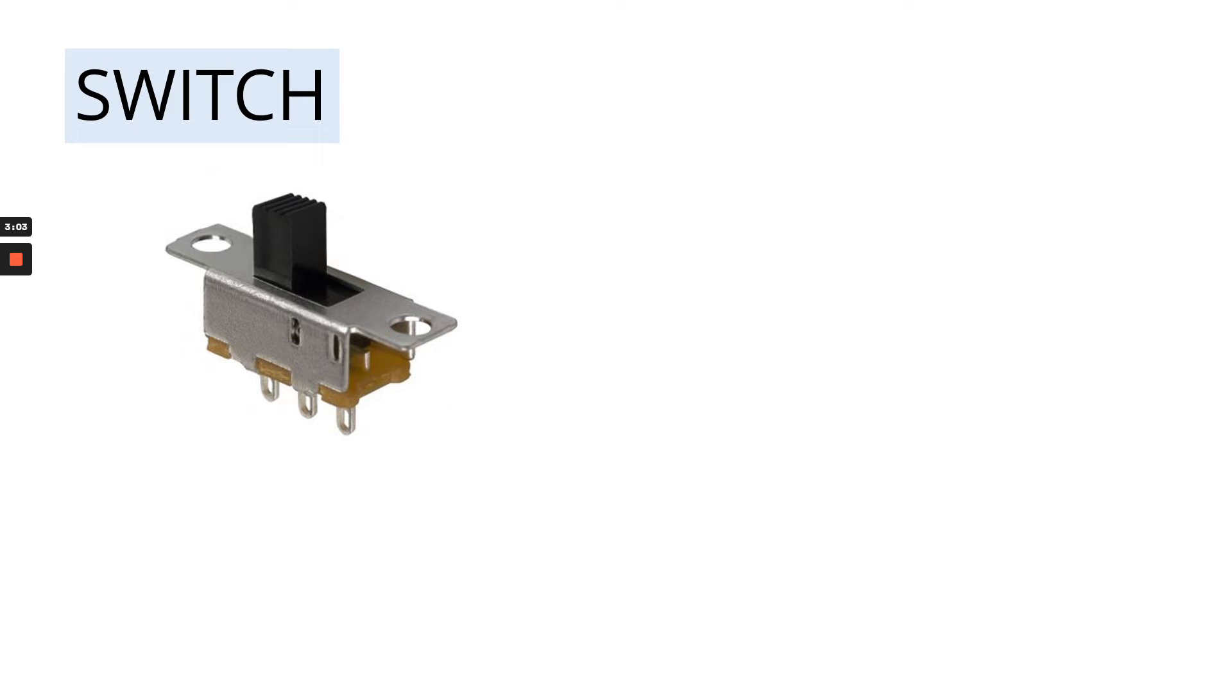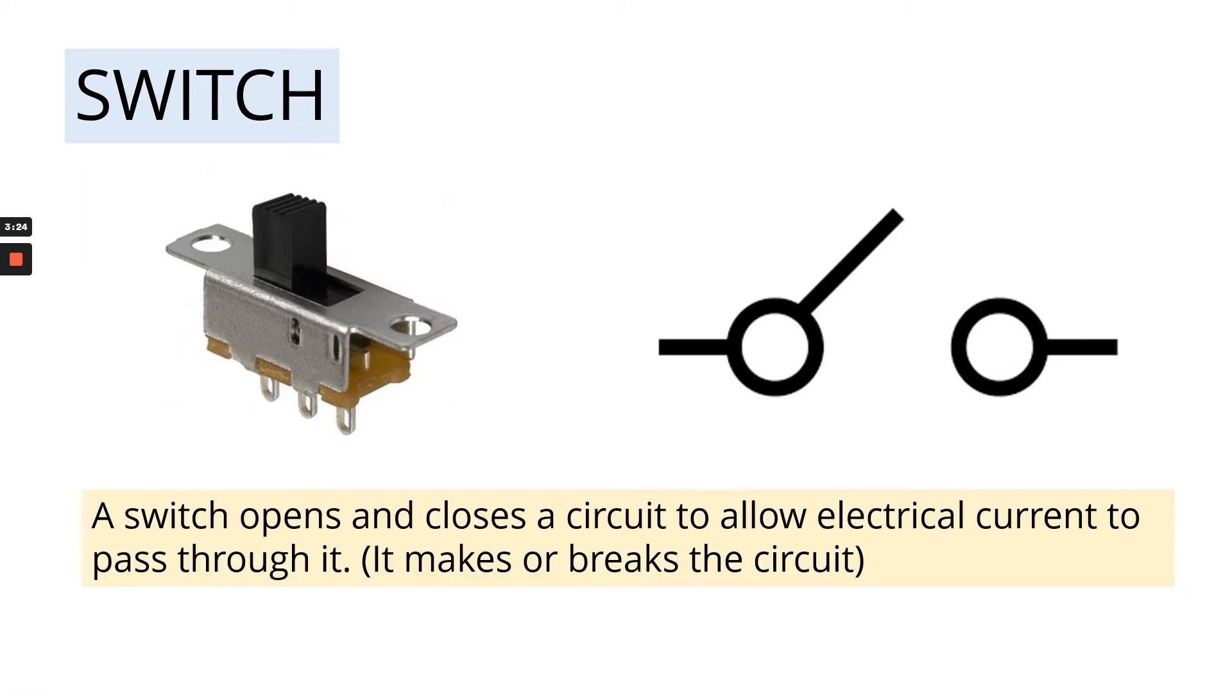So our first one we're looking at is a switch. This is the type of switch that you've got. You've got a toggle switch. And this is the component symbol. So in that first box, you need to be drawing this symbol here on the right. And then in the box next to it on the right hand side, you're going to write down the description of this component. So a switch opens and closes a circuit to allow electrical current to pass through it. So essentially it makes or breaks the circuit.